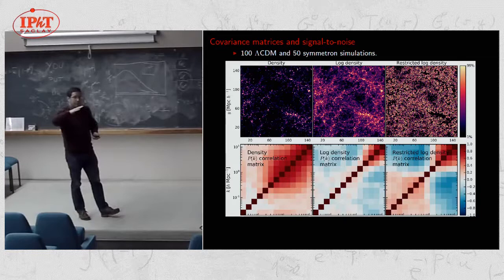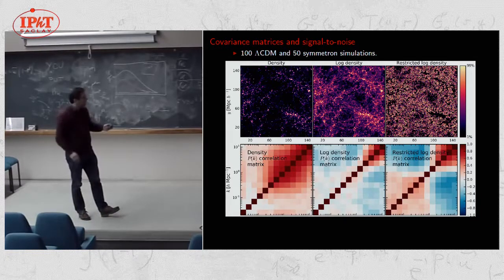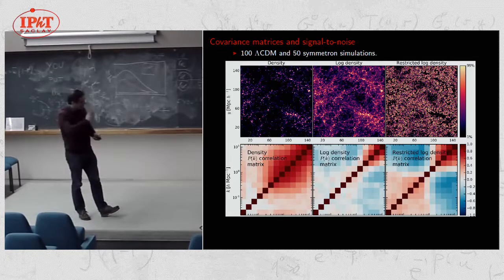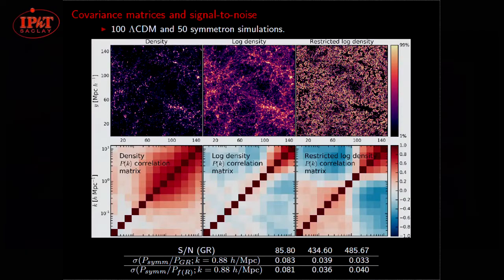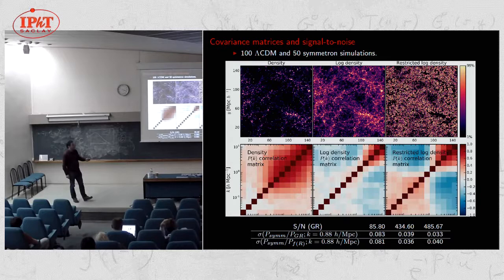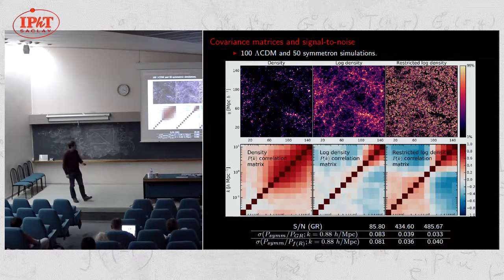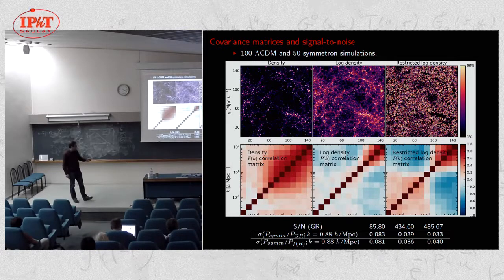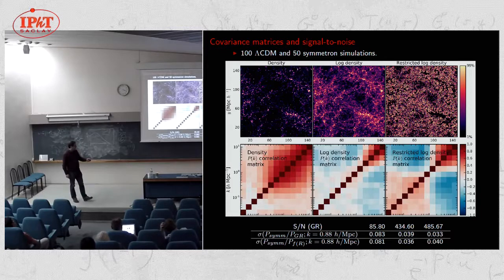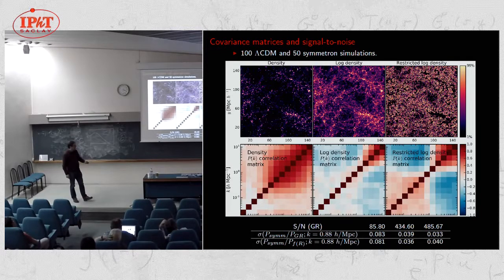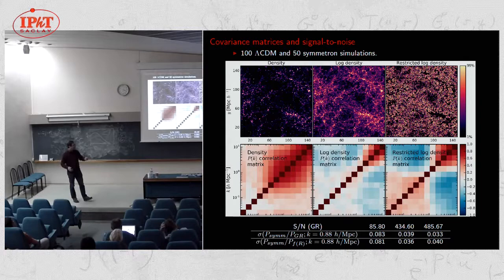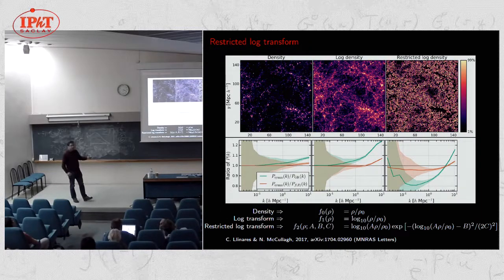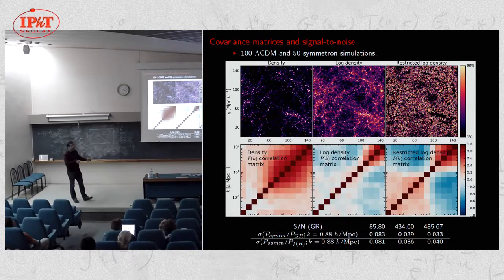And for the restricted log transform, this is the correlation matrix we get. Basically what happens is that the power spectrum, instead of moving it up and down, it tilts around a particular scale. But so we have these matrices and we calculated the signal to noise. For the usual density, for these simulations, it's 85. And you see that for the log transform, it goes up. And for the restricted log transform, it goes even higher. And this is the variance at the particular scale. You see that the error bars go down. So it's a win-win situation. I mean, you increase the difference between the models with these transformations and you increase the signal to noise.